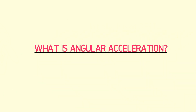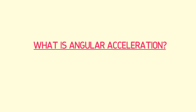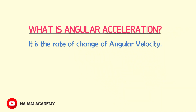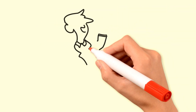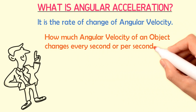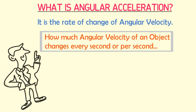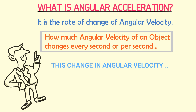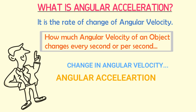How can you define angular acceleration? Angular acceleration is the rate of change of angular velocity. Simply put, it describes how much the angular velocity or angular speed of an object changes every second. This change in angular velocity per second is known as angular acceleration.